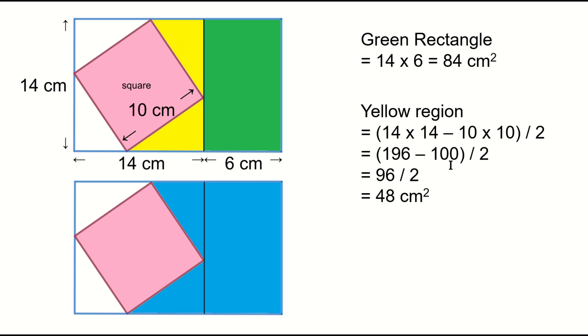Equals 196 minus 100, divided by 2. Equals 96 divided by 2, equals 48 square centimeters.